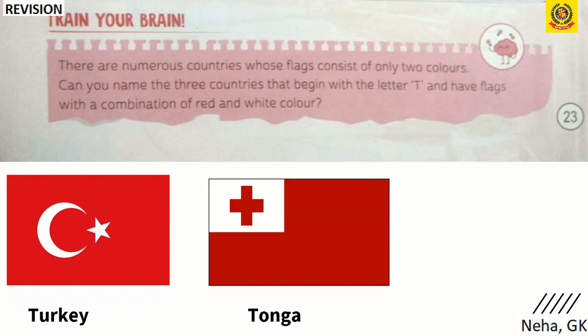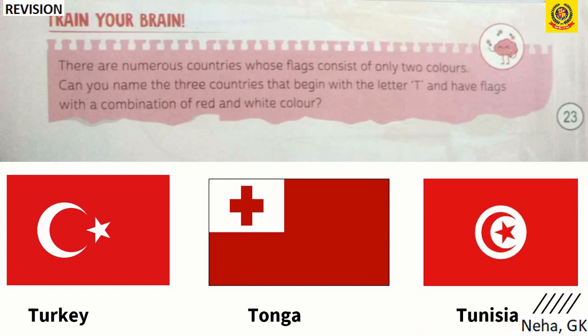Next is Tonga — it has a red background with a plus symbol in red and the background of the plus symbol is white. Then Tunisia — the background is red and the moon and star are red, but the background of the moon and star is white. These three countries starting with T have only red and white in their flags.